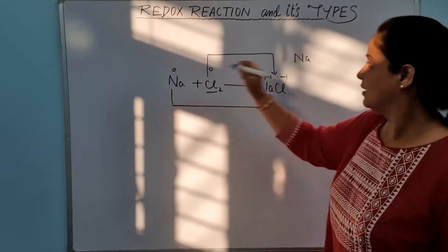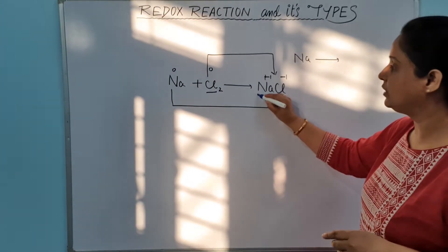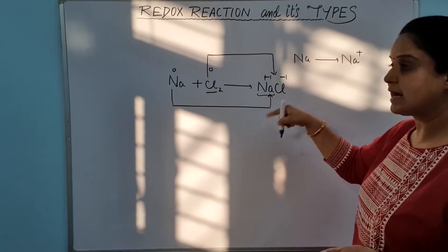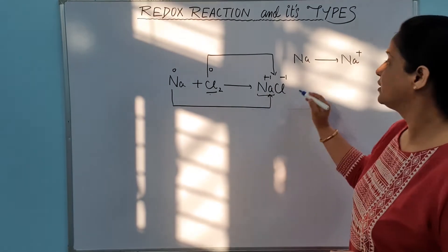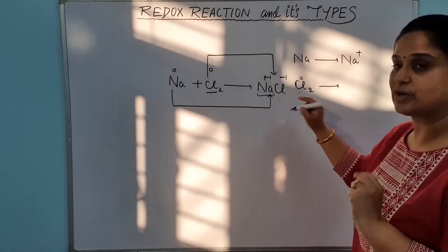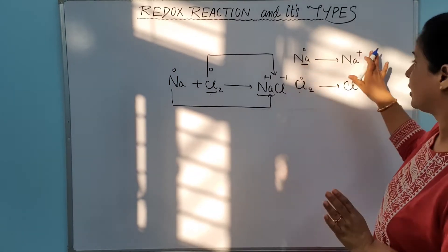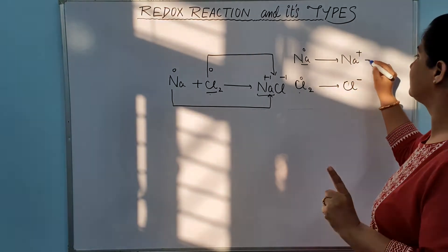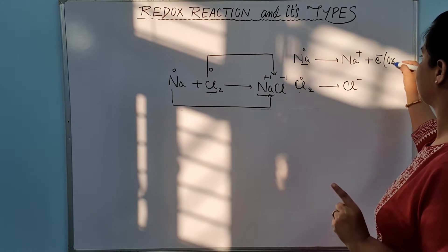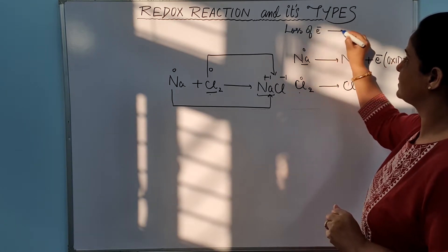Now let's concentrate on sodium. Sodium was at the 0 oxidation state — no loss, no gain. In NaCl, sodium is at Na⁺. This means sodium has lost 1 electron. Loss of electron is called oxidation. So here, sodium is undergoing oxidation. Always remember: loss of electron is oxidation.